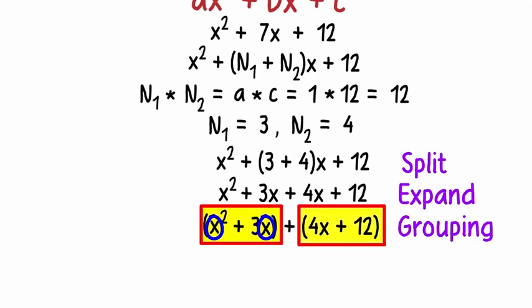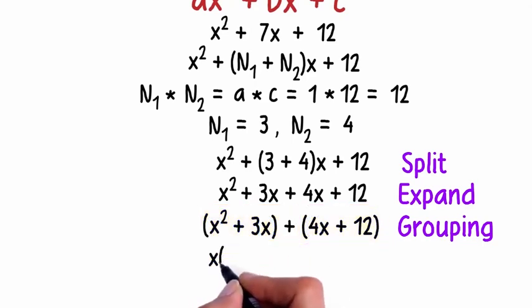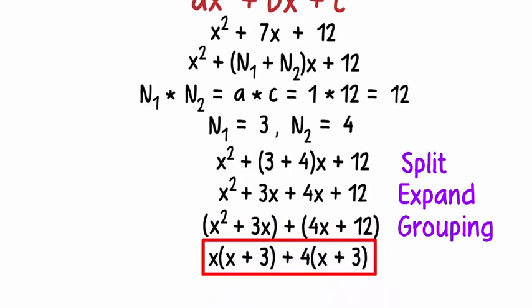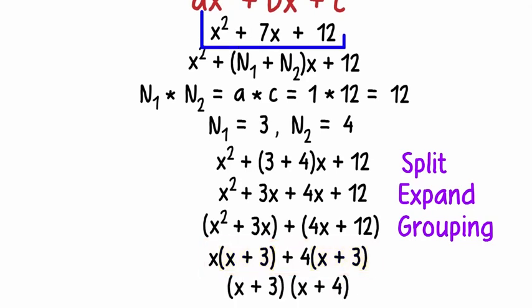After expansion, we group the terms like this. And how does grouping help? We look for common terms in each group. In the first group, x is common, and in the second, 4 is common. So this can be written as x(x + 3) + 4(x + 3).